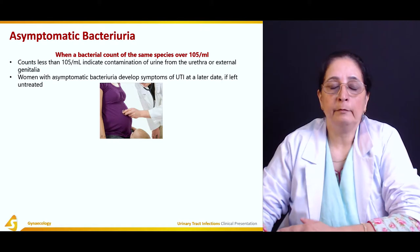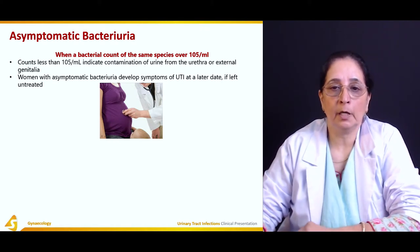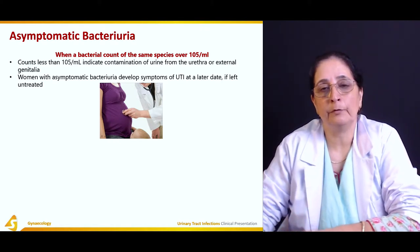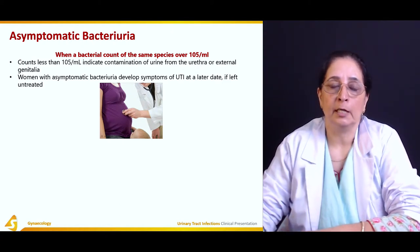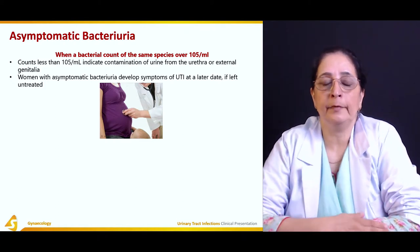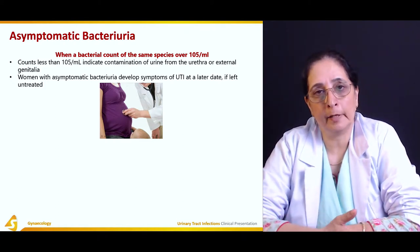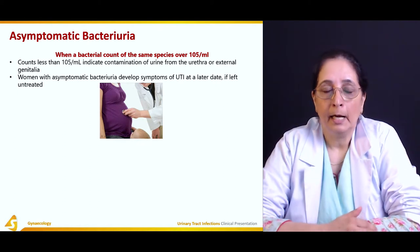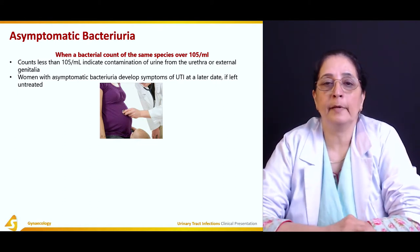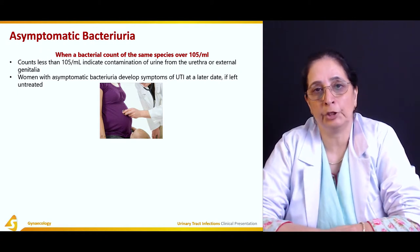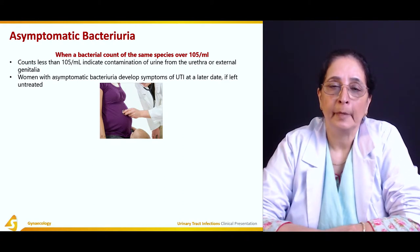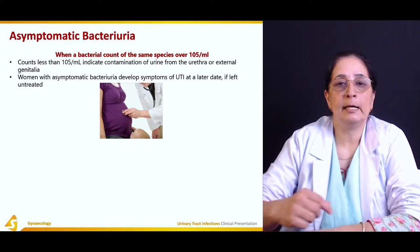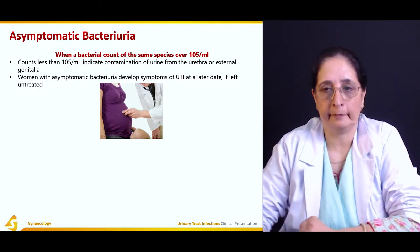Women with asymptomatic bacteriuria usually develop symptoms of urinary tract infection at a later date if left untreated. So on urinalysis, if the bacterial count is above 10⁵ per ml and the patient does not have any symptoms of UTI, they are labeled as asymptomatic bacteriuria, but later, if the condition is not treated, they develop symptoms of the urinary tract infection.